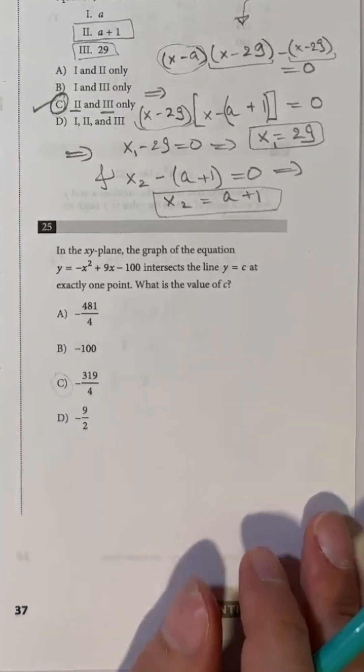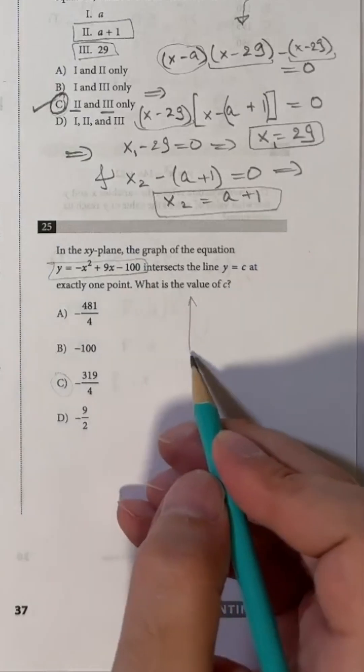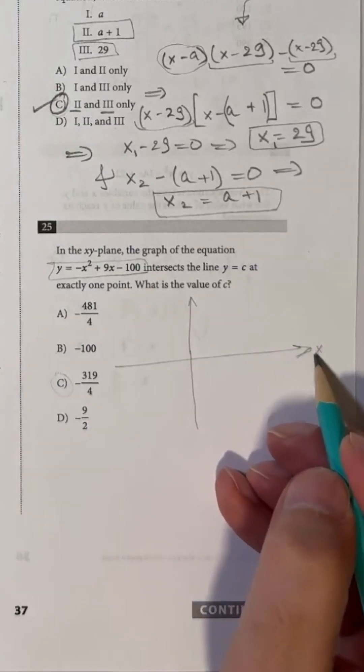You're given an equation whose graph intersects line y equals c at exactly one point and you need to find the value of c.